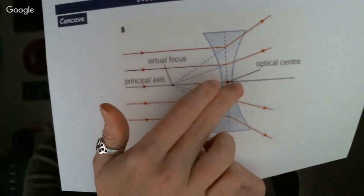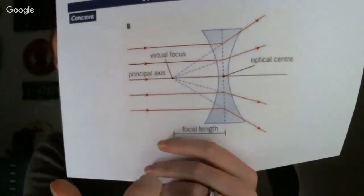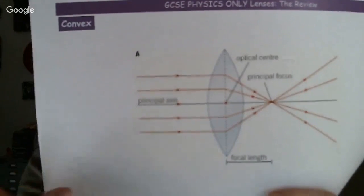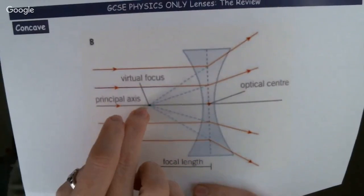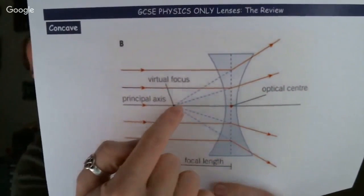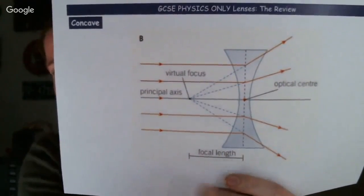For the concave lens diagram, rays coming in are bent outwards. The focal length is the distance from the virtual focus to the optical centre. The virtual focus is found by extending the diverged rays back in a straight line — they all meet at one point which is the virtual focus.